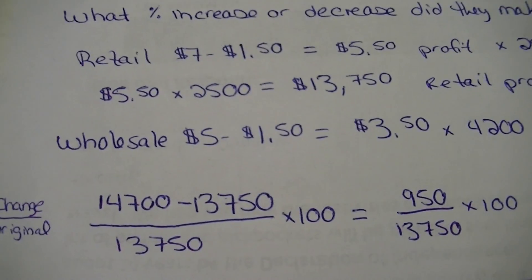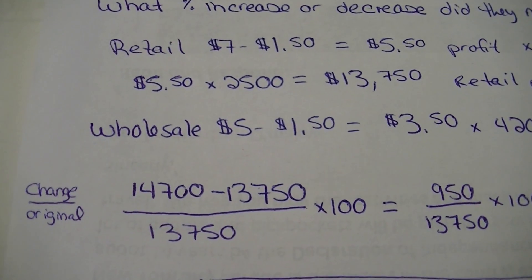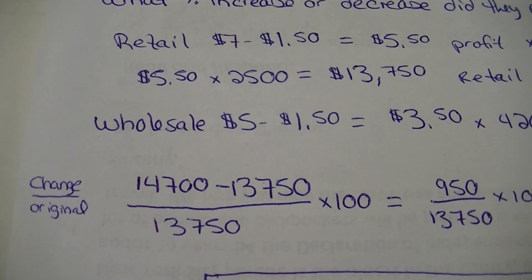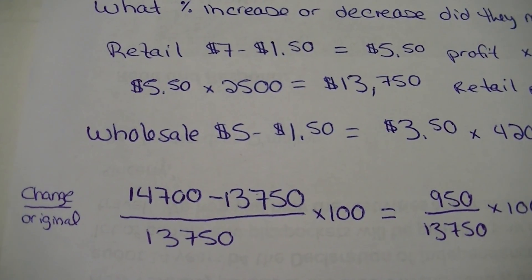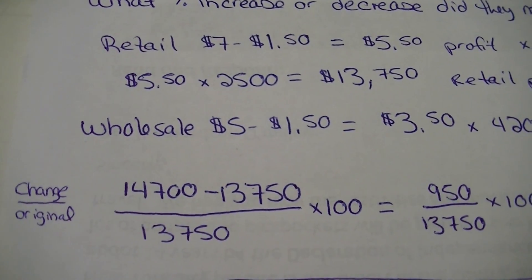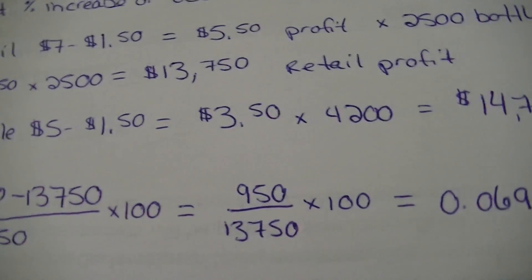Now, the original was the original retail profit price. Okay. So that's $13,750. That's going to stay on the bottom. So again, change over original and we subtracted those, we got $950 on the top and our original price was $13,750.